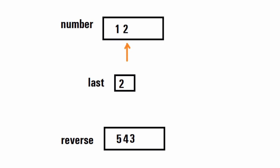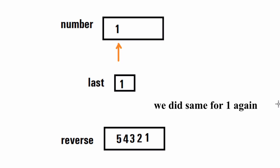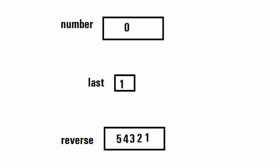After removing 3, we store digit 2 in 'last', multiply reverse by 10 to get 5430, and add 2 to get 5432. After removing 2, the reverse number is now 54321 and we remove the final 1 from the number. Once the number becomes 0, we stop the process and simply print the reverse number, which is 54321.